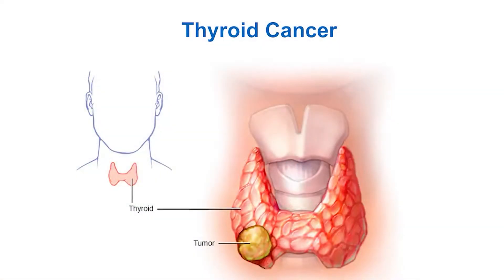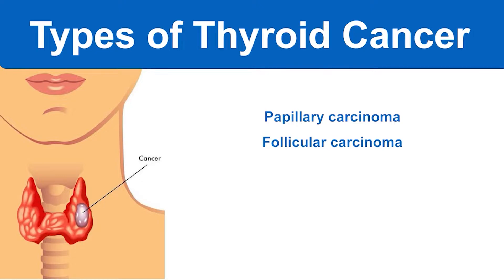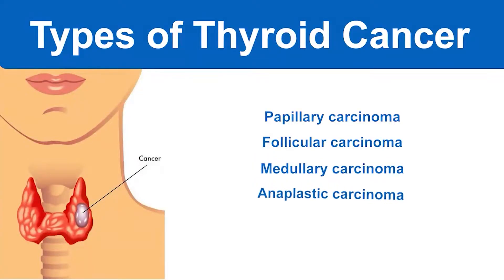Thyroid cancer types include papillary carcinoma, follicular carcinoma, medullary thyroid carcinoma, and anaplastic carcinoma. Sometimes lymphoma occurs, but it is rare.